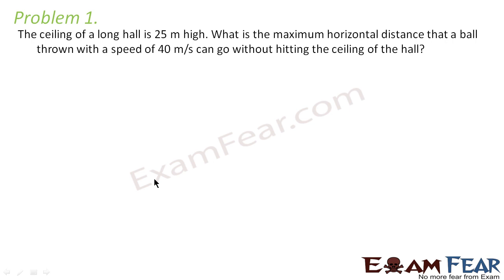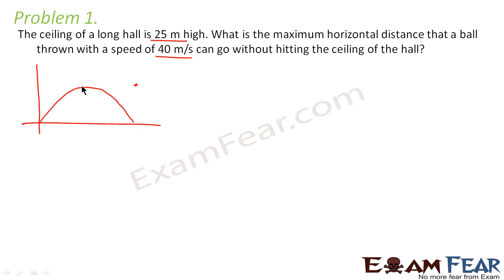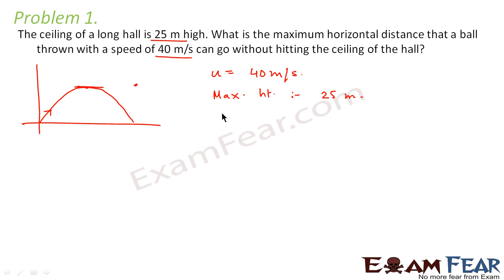Now let us look at problem one. It says: the ceiling of a long hall is 25 meters high. What is the maximum horizontal distance that a ball thrown with a speed of 40 m/s can go without hitting the ceiling? The ceiling represents the maximum height the ball can reach. So u = 40 m/s and maximum height H = 25 meters. We have to calculate the maximum horizontal range.